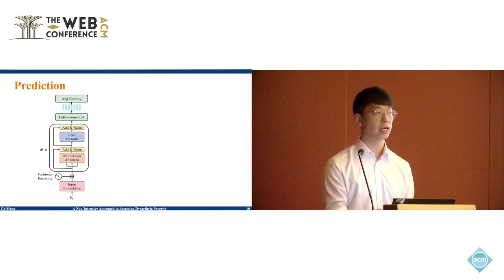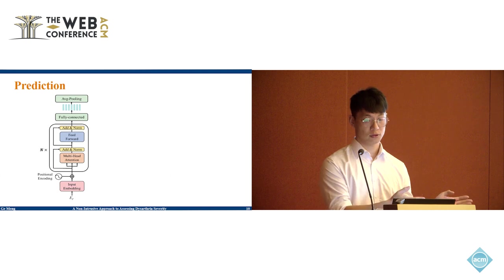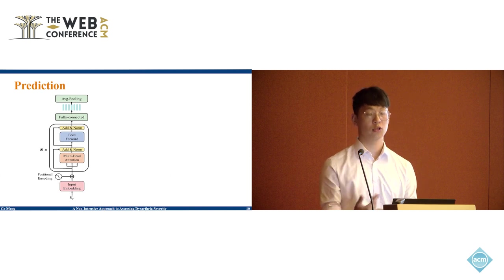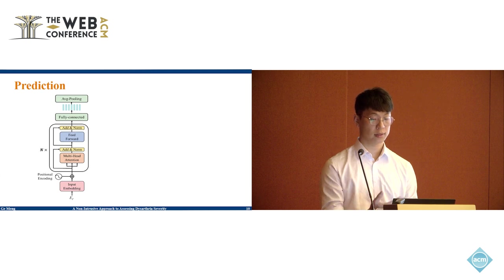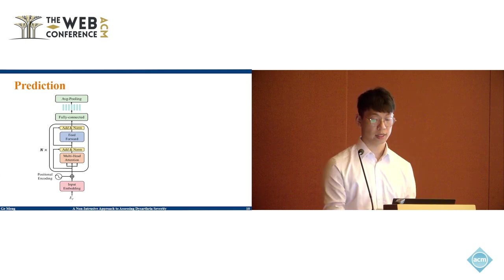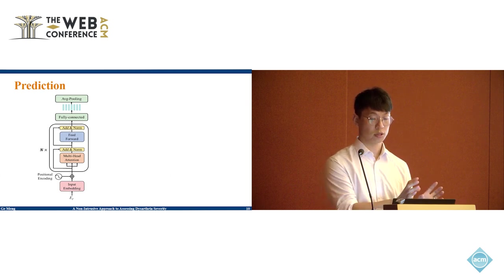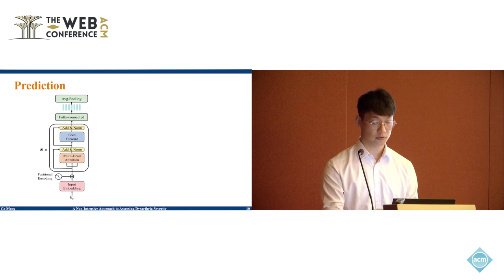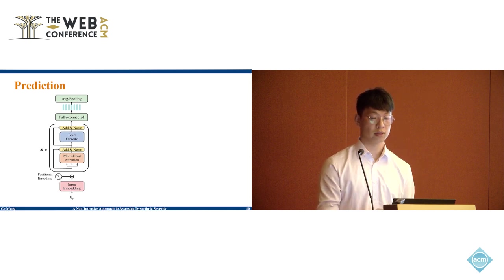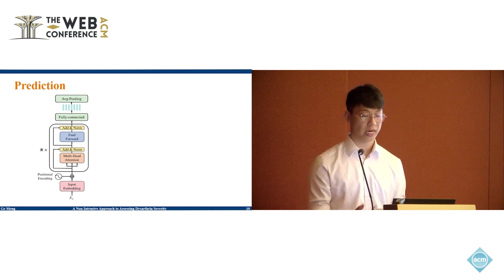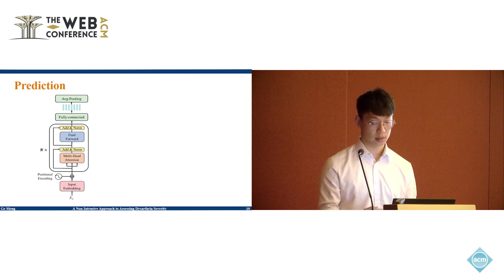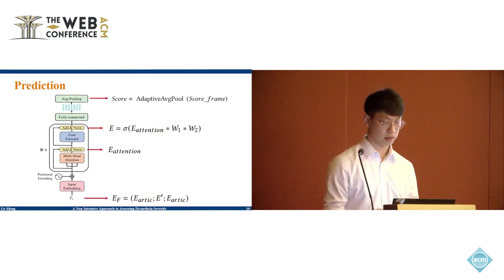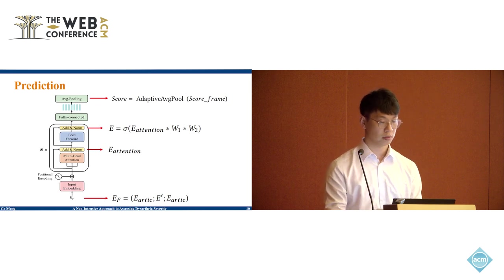For the prediction module, we start by fusing the prosody emphasis frame-level features and articulatory features as input. This combined feature then passes through an attention mechanism, which helps the model focus on the most relevant cues of the speech. Following this, it goes through a fully connected network that computes a quality score for each frame. Finally, we do a global average to calculate the final score from the frame scores. This method ensures that the evaluation captures both the detailed and comprehensive aspects of speech related to the disorder.